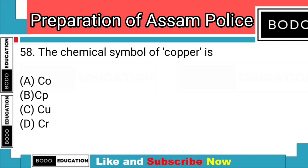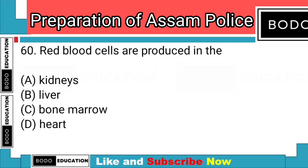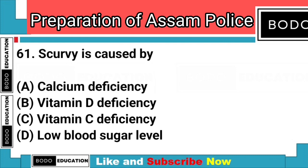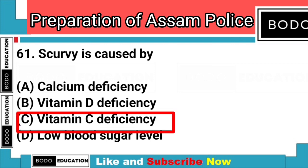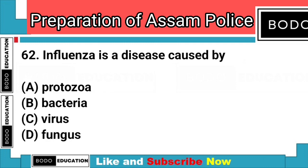Question number 58: The chemical symbol of copper is? Answer: Option C — Cu. Question number 59: Pituitary gland is a part of? Answer: Option D — Endocrine system. Question number 60: Red blood cells are produced in? Answer: Option C — Bone marrow. Question number 61: Scurvy is caused by? Answer: Option C — Vitamin C deficiency. Question number 62: Influenza is a disease caused by? Answer: Option C — Virus.